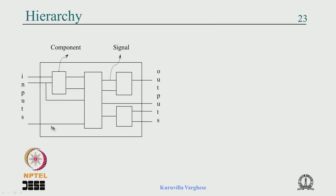All distinct components used for interconnection must be declared in the architecture declaration region. Internal signals — wires that are not part of the input or output ports — must also be declared with a name and data type but no direction. So the game is: define a top-level entity with input/output ports, declare the components and internal signals in the declaration region, then in the architecture statement region define the netlist of interconnections.